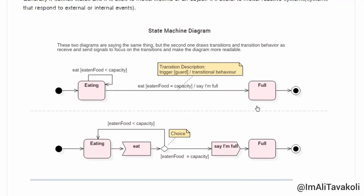Here, we have a state machine example. We have two diagrams. Here, this one and this one. Which are going to actually do the same thing. I mean, demonstrating the different states of eating process. But, the difference between these two state machine diagrams is that in this second one, we draw transitions and transition behavior as receive and send signals to more focus on the transitions and make the diagram more readable. So, in here, we start our process by the initial state notation. Then,